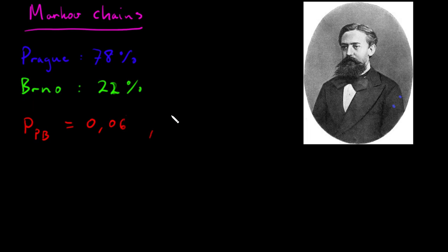And the probability of moving the other way, also from Brno to Prague, that is 0.02, so only 2%. And using this information, we can develop a sort of simulation of how the movement patterns is going to develop annually.